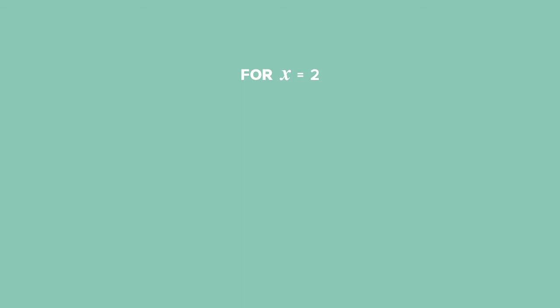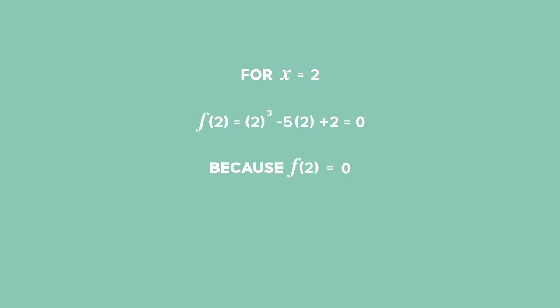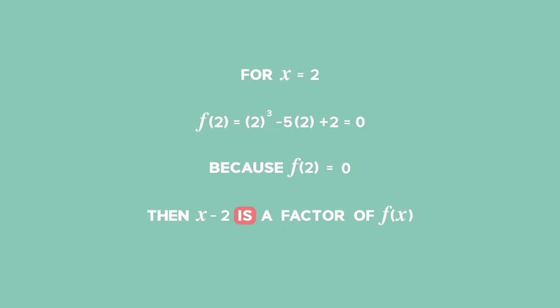For x equals 2, we obtain f of 2 equals 2 cubed minus 5 times 2 plus 2, which equals 0. Because the answer is equal to 0, therefore x minus 2 is a factor of f of x.